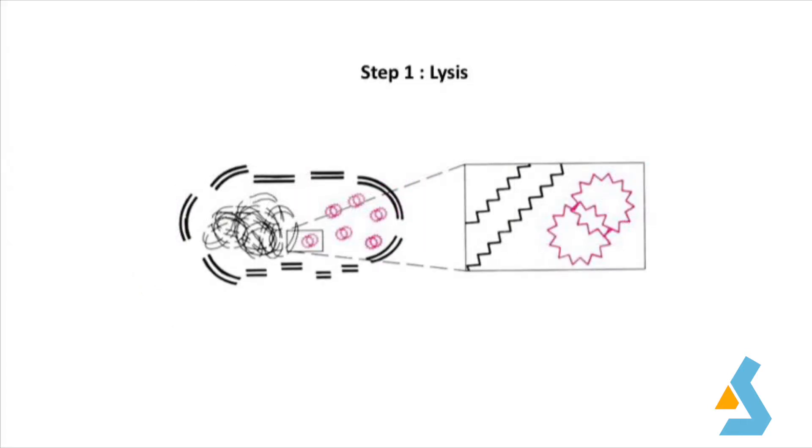First step is lysis. In this step the cell and/or the nucleus are disrupted to release the DNA kept inside by using a detergent. The detergent breaks down the lipids in the cell membrane and nuclei and DNA is released as these membrane structures are broken.